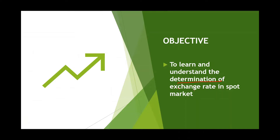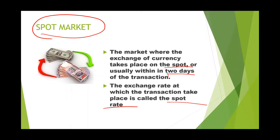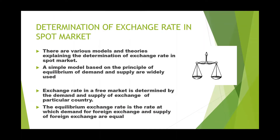The spot market is the market where the exchange of currency takes place on the spot itself, or usually within two days. For example, if you want to purchase one dollar, you go to the foreign exchange market, give some Indian rupees, and instantly you will get the dollar — that market is the spot market. The exchange rate at which the transaction takes place is the spot rate. For example, if you need 76 rupees to purchase one dollar, that 76 rupees is the spot rate. The question is: on what basis is this spot rate determined?